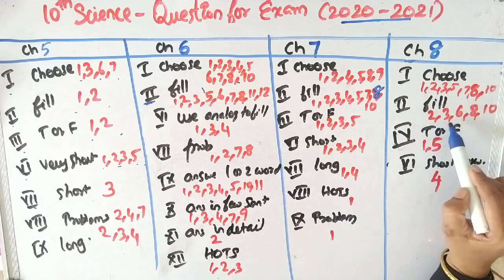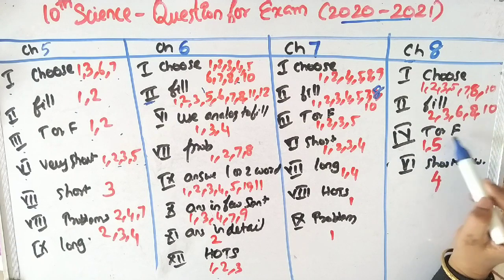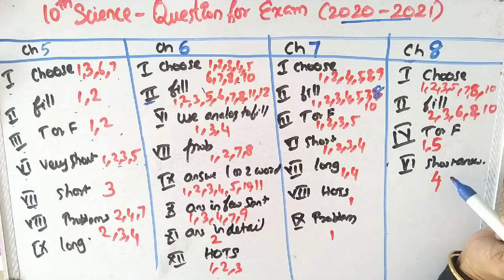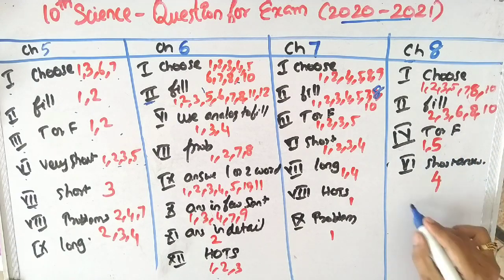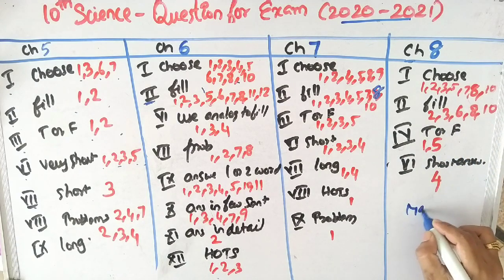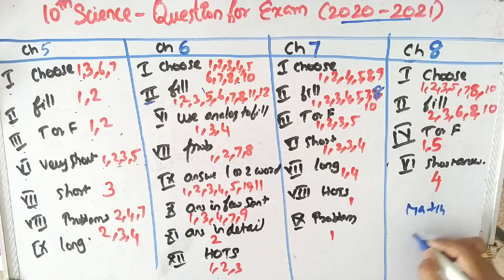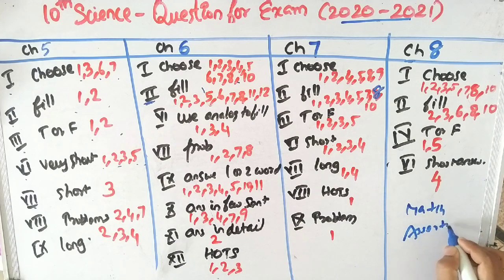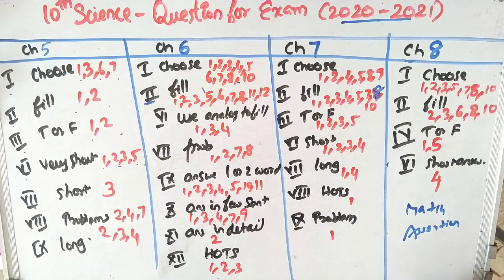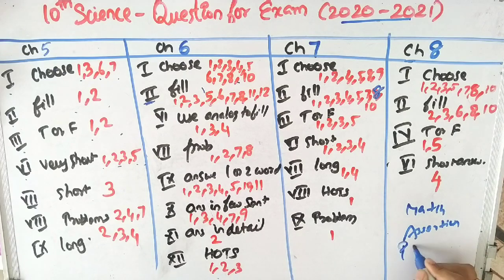In chapter 8, first row: questions 1, 2, 3, 5, 7, 8, 10. Second row — fill the blanks: questions 2, 3, 8, 9, 10. True or false: questions 1, 5. Short answer: question 4. This is the match the following. If you have any questions, please pause the video.